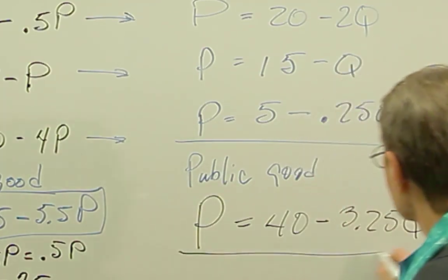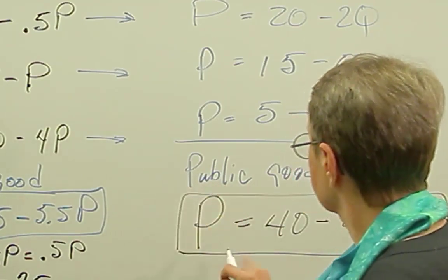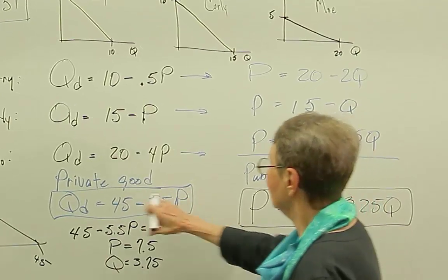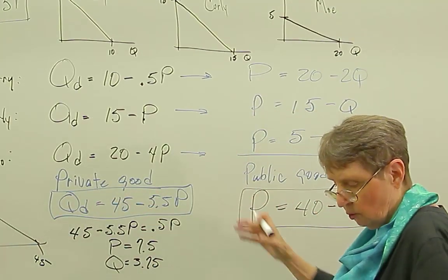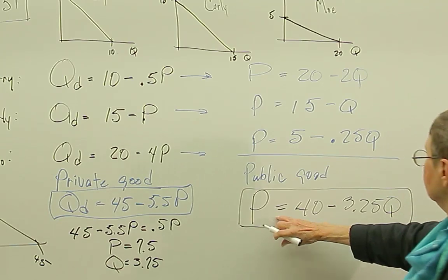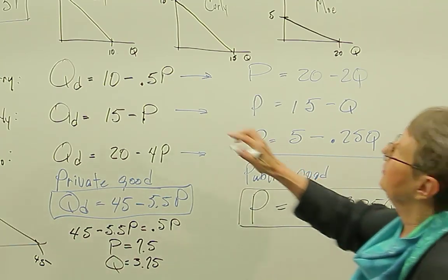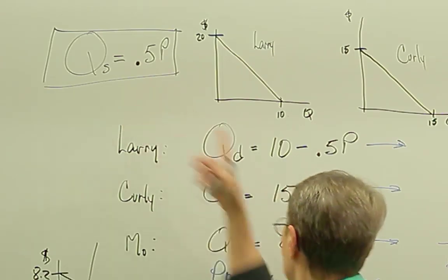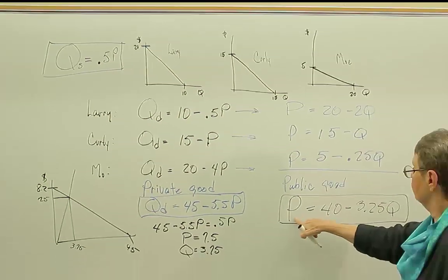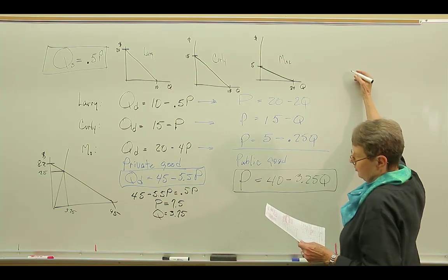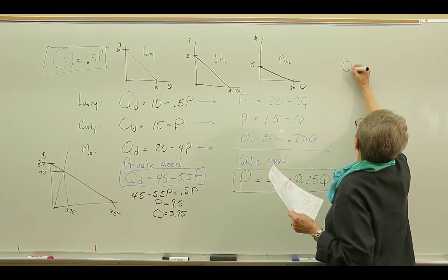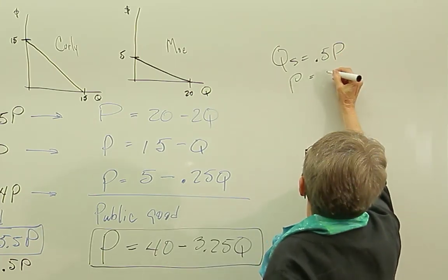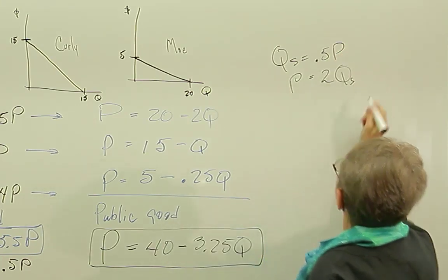But P equals 40 minus 3.25Q. So this is my equation if it's a public good, my market demand. This is my market demand if it's a private good. So if this is the demand for a public good, and here's the supply. So we set supply equal demand. We need to solve that for P, because this is already solved for P. So let's just take Qs equals 0.5P and solve it for P. So that means P equals 2Q.